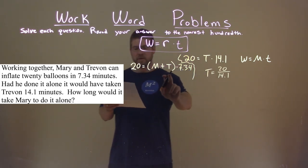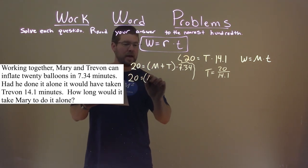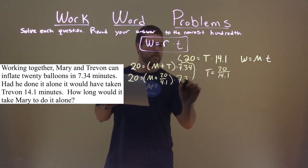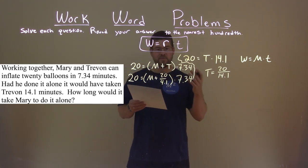So we're going to take that and we're going to substitute it in for T right here. So we have 20 equals M plus 20 over 14.1 times 7.34. And now we have enough information to solve for M.